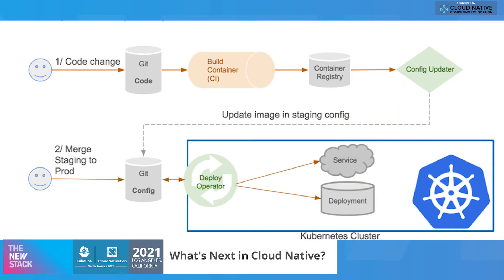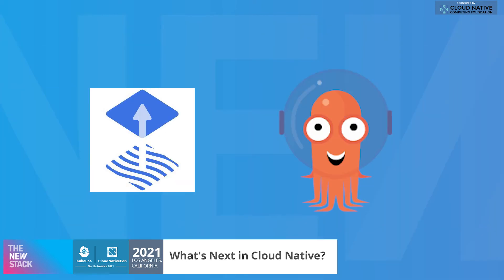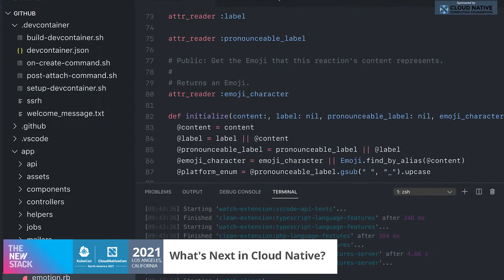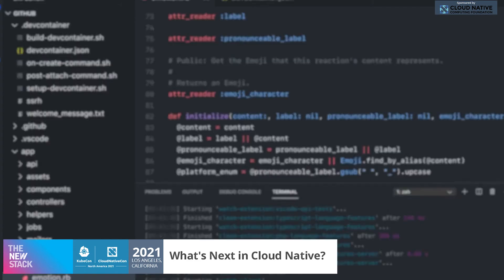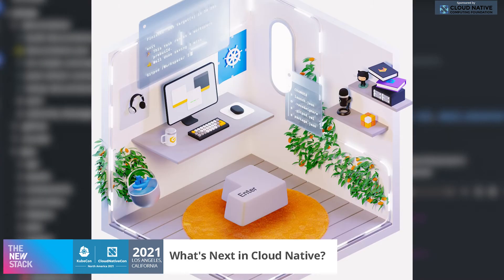GitOps, for example, defines the configuration of an application. It then gets reconciled by services such as Flux or Argo. This move is also evident in developer environments with things like GitHub Codespaces and Gitpod.